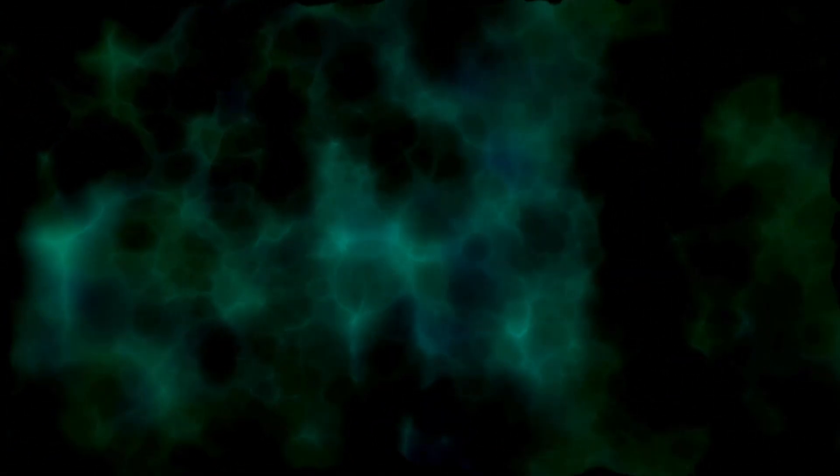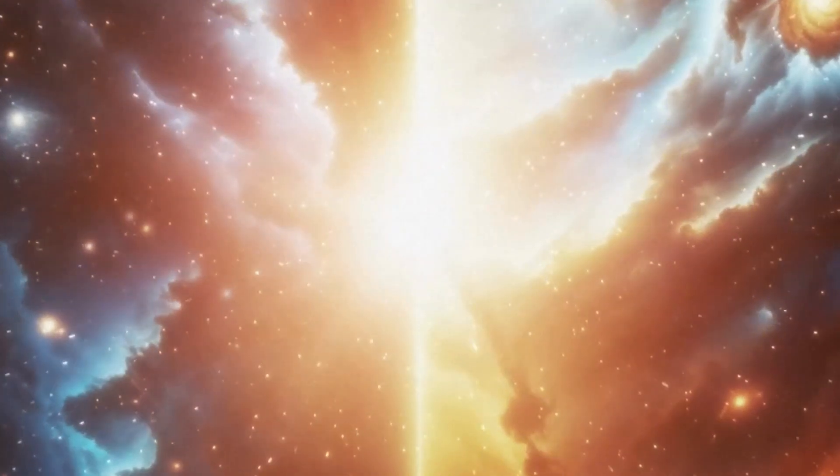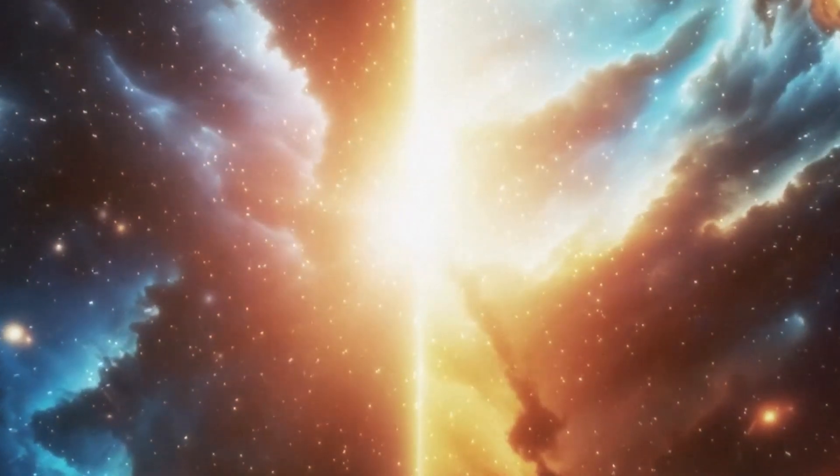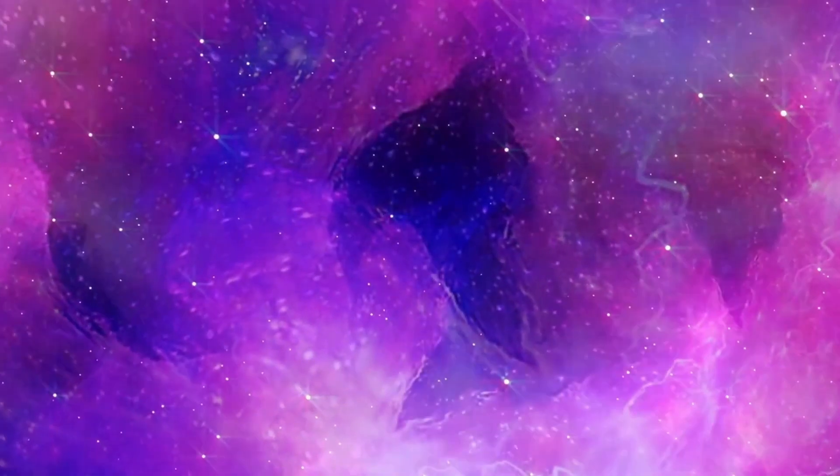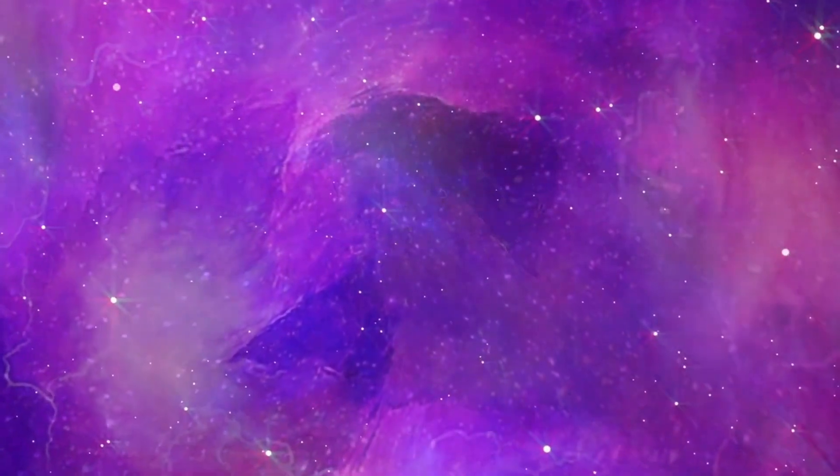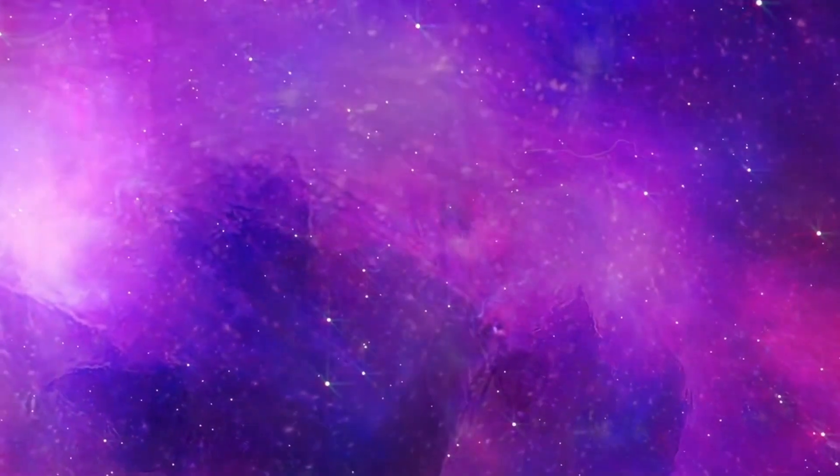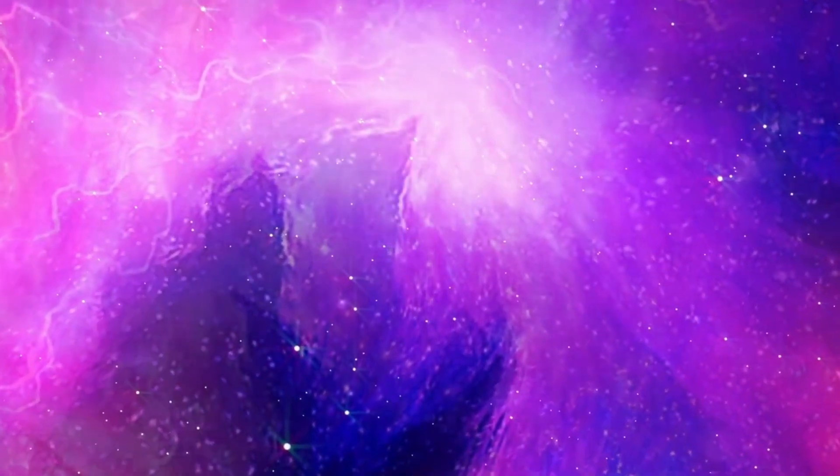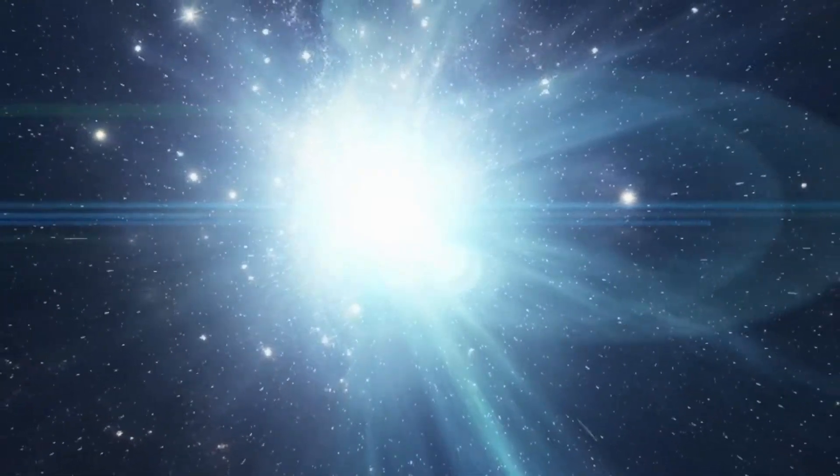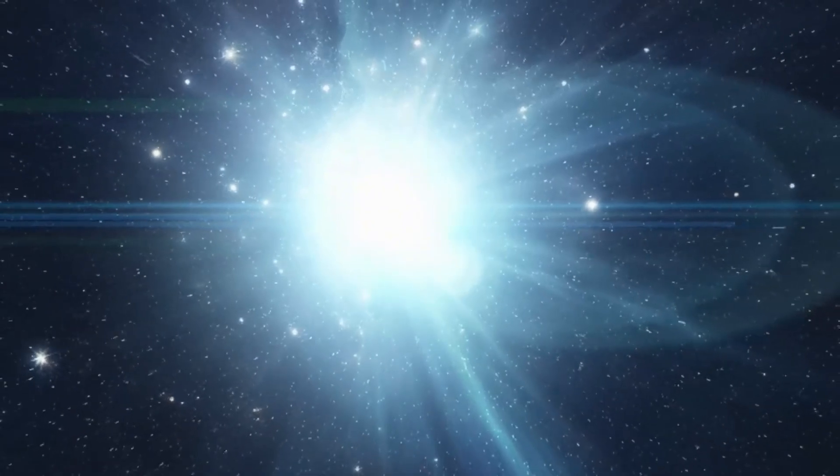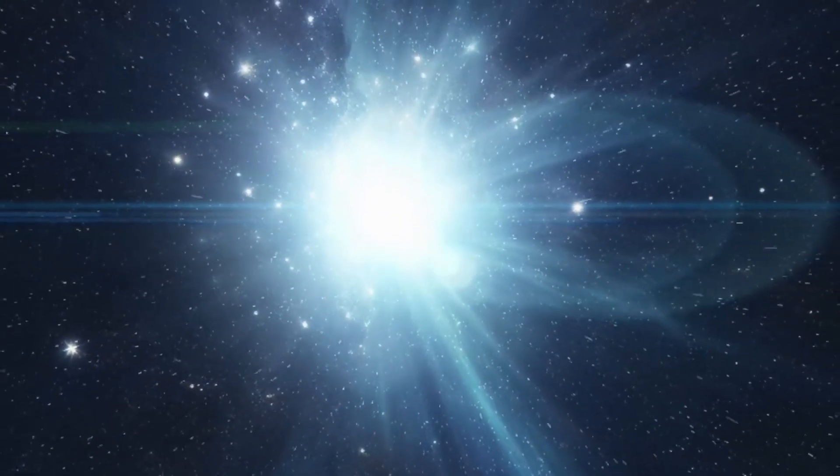Next in line were the population 2 stars, forming a later but still significant chapter in the universe's early days. Their original materials were loaded with heavy elements, particularly iron. Many of them went through their stellar life cycles, exploding into supernovae and adding more heavy elements to the universal blend. Finally, the population 1 stars, including our sun, emerged as cosmic newbies, forming from advanced gas clouds mixing with remnants from the earlier population 2 stars.